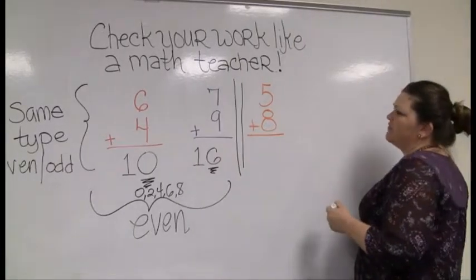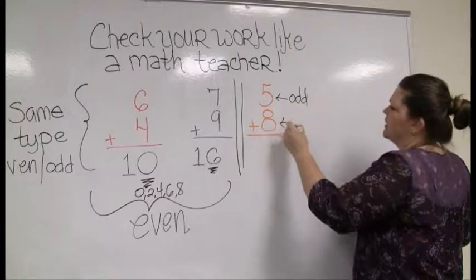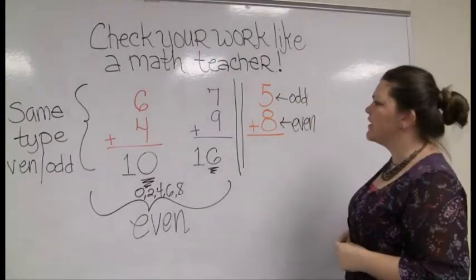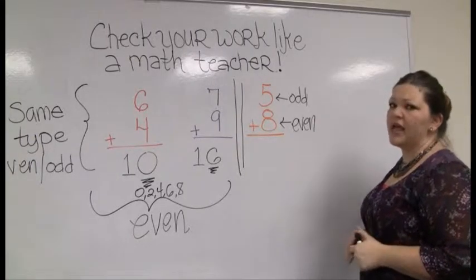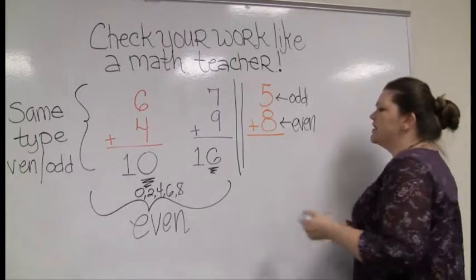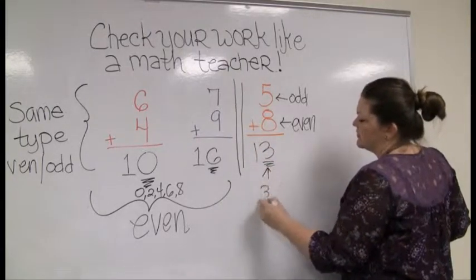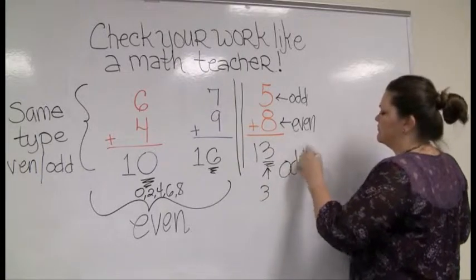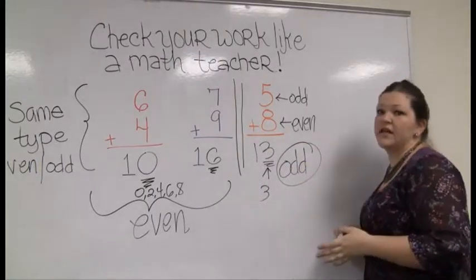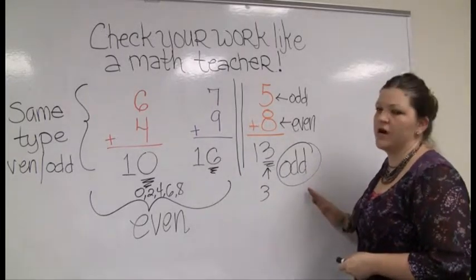Conversely, when I have different types of number, five is an odd number and eight is an even. This is the only time in addition that I'm going to see an odd answer. Five plus eight, well, that's thirteen. Ends in a three. That's odd. So that should help you cut down on half of the mistakes that most people make in their addition. Know if your answer should be even or odd.